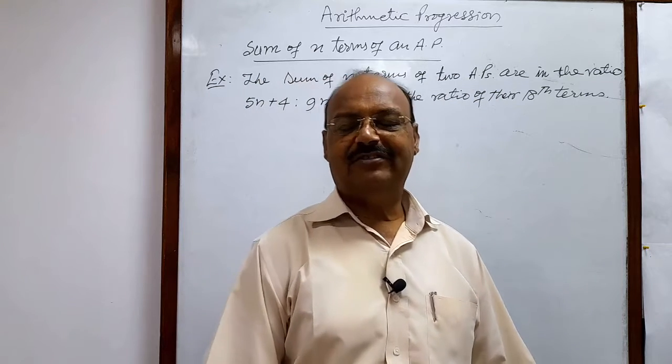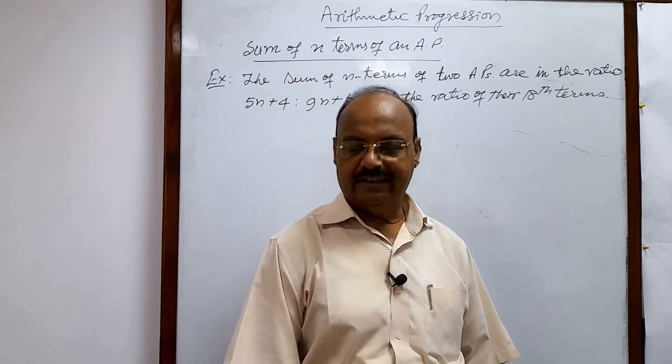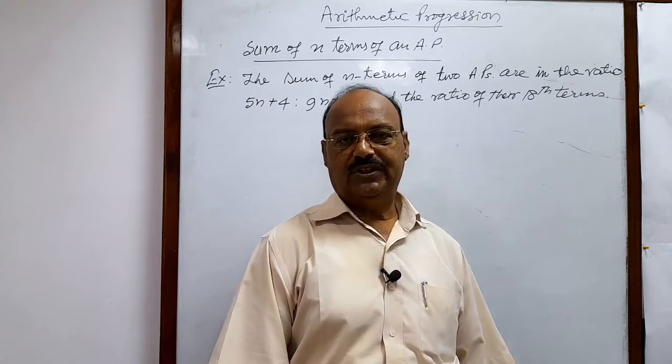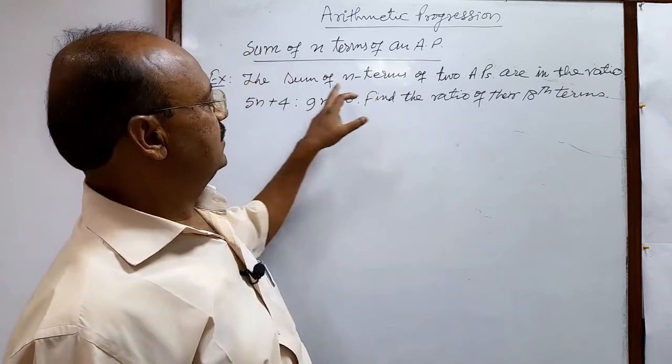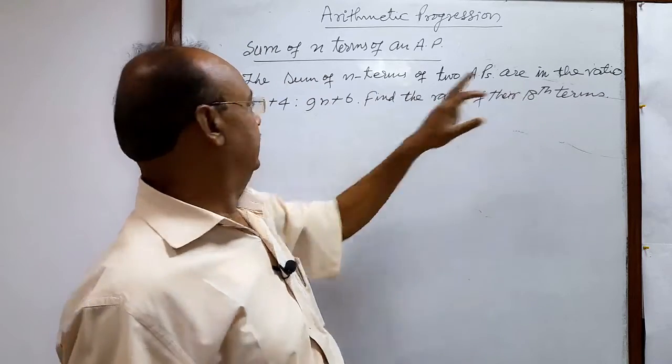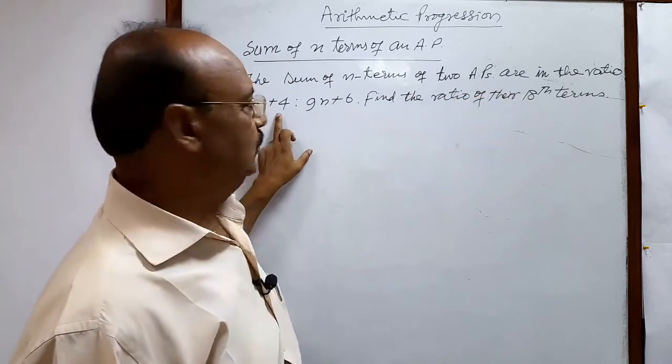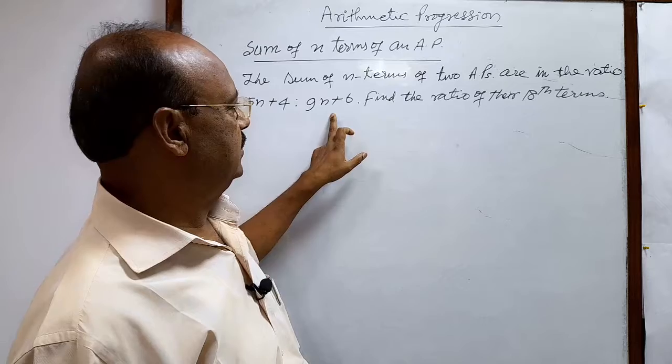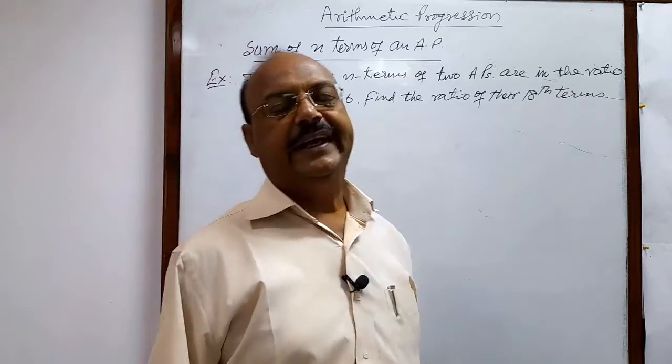Welcome students. Let us see a very important question from the topic arithmetic progression. Here the question is: the sum of n terms of two arithmetic progressions are in the ratio 5n+4 is to 9n+6. Find the ratio of their 18th terms.